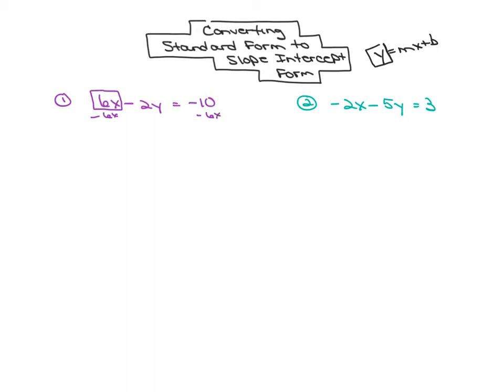So then I'll have negative 2y left on this side, and I'll have both negatives on the right. So negative 6x minus 10. I like to put that x term first to get it in slope-intercept form.